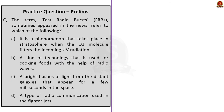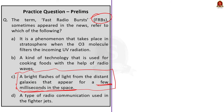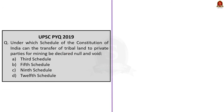See the third question: The term Fast Radio Bursts or FRB sometimes appears in the news — referred to which of the following? From our news article discussion, the answer is: bright flashes of light from distant galaxies that appear for a few milliseconds in space. So the correct option is option C. See the final question of the day — a UPSC previous year question: Under which schedule of the Constitution of India can the transfer of tribal land to a private party for mining be declared null and void? The third schedule deals with oath and affirmation of union ministers, MPs, MLAs, etc. — wrong. The ninth schedule deals with laws given immunity from judicial review — wrong. The twelfth schedule deals with functions of urban local bodies — wrong. So the correct option is option B — the Fifth Schedule.